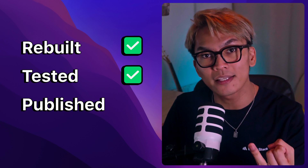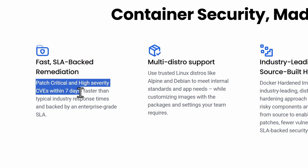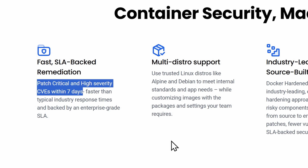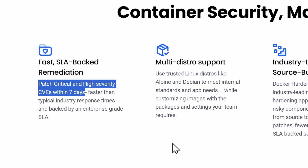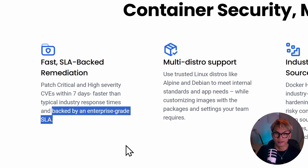According to Docker, this can shrink your image's attack surface by up to 95%. Another interesting thing — these hardened images aren't just static snapshots. Docker says they're continuously rebuilt, tested, and published, and they promise to patch critical and high severity vulnerabilities within 7 days. They're backed by an actual enterprise-grade SLA, which is huge especially for teams running production workloads.